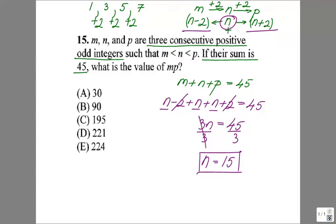Well, I found my middle term, but the question is asking me to find what is the product of MP. So next thing, you're going to find what is your M. M will be N minus two, which makes my M equal to 13. What is your P equal to? Well, P is N plus two, which will be 17.